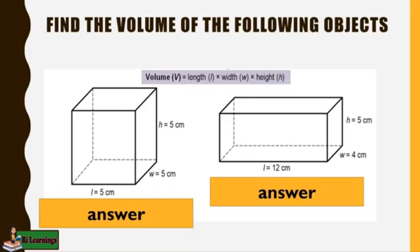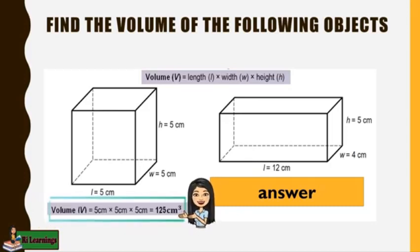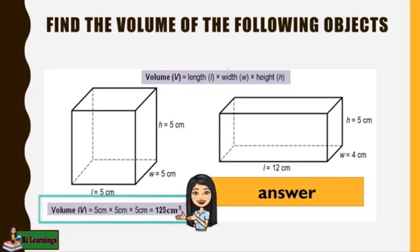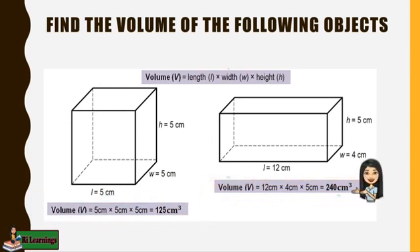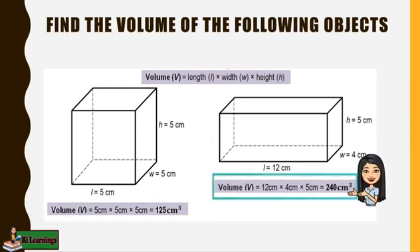Let's check your answers. For number one, the volume for the first object is 125 cubic centimeters. For the second object, the volume is 240 cubic centimeters.